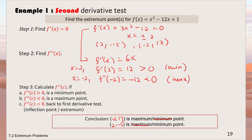Both tests give the same conclusion. The difference is that the second derivative test requires differentiating the function twice, while the first derivative test requires building a table. The first derivative test is needed because there are cases where the second derivative test fails.